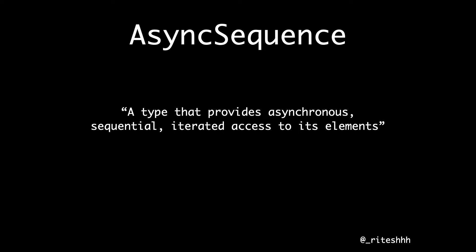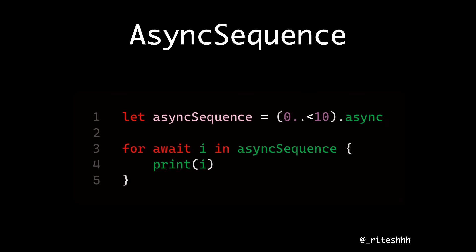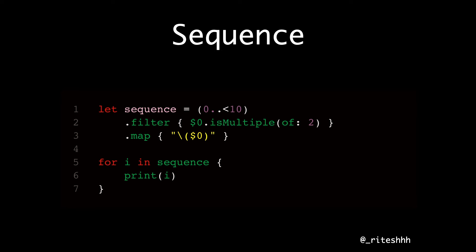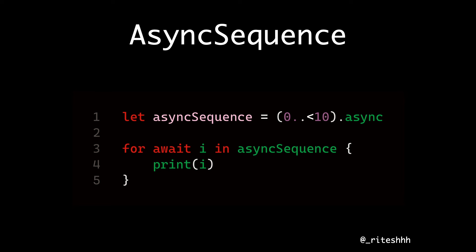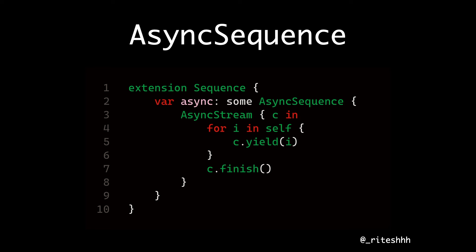AsyncSequence is a type that provides asynchronous sequential iterated access to its elements. We've all seen a simple sequence — moving from 0 to 10, and in a for loop we listen to the values. That same sequence has the power of applying filters, map, etc. And if you add an extension to give an async version of that sequence, you move from a sequential world to an async world. The for loop still remains, but with the new keyword await — that's the comfort of async/await. AsyncSequence gets the same operators as well: filter, map, flat map, and the for loop remains the same.